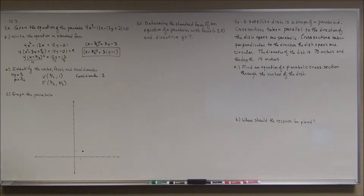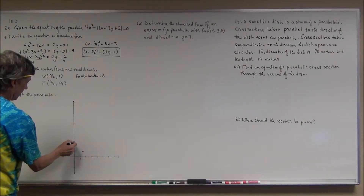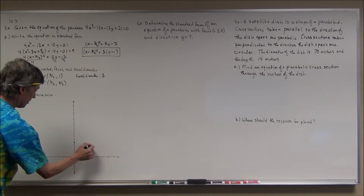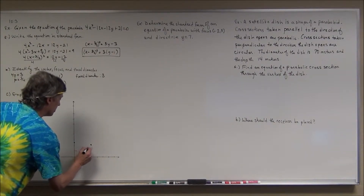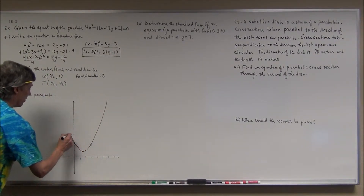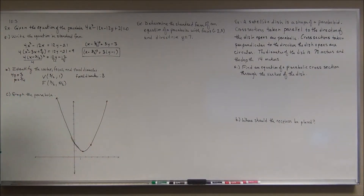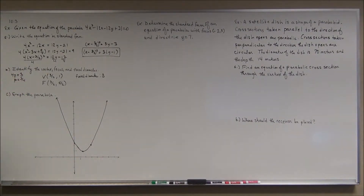My focal length was three-fourths but the focal diameter is four times that, which is 3. For the endpoints of the latus rectum, from the focus I go three-halves to the right and three-halves to the left. If you want to plot more points, you can solve for y and plug in x values. There's the graph.